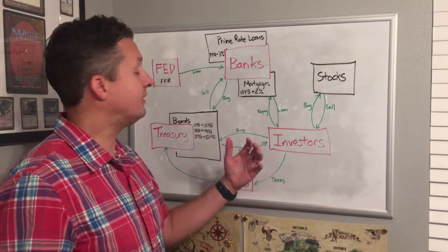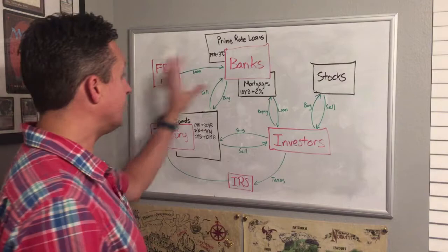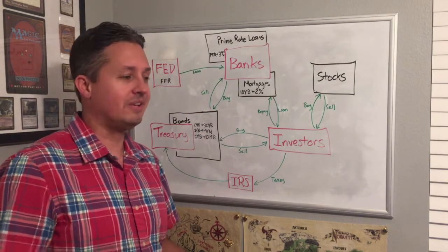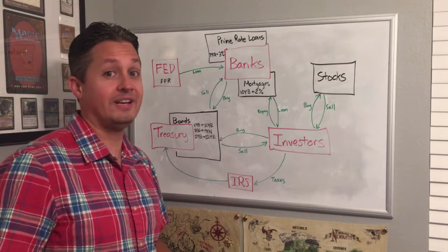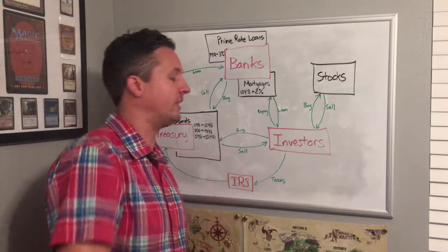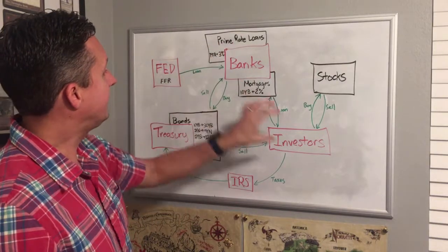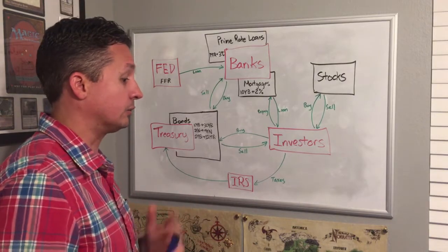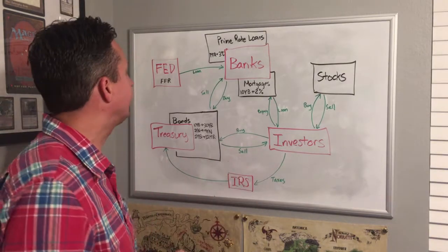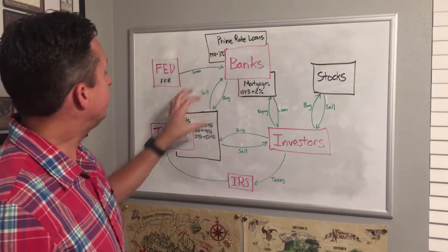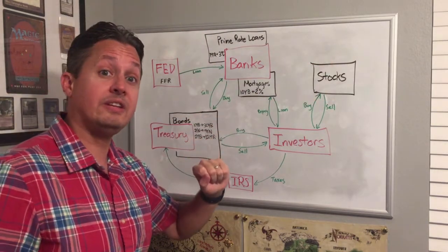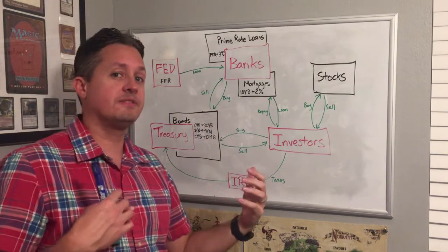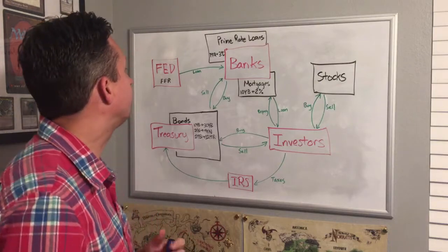I want to talk about interest rates. I know the board looks complicated but I'll try to break it down. I drew it beforehand to save time. The red things you see are all different entities that actually exist — groups, buildings, people in them. The black things are things that can all actually be invested in, and the green is basically the transactions of money flowing back and forth between different groups.